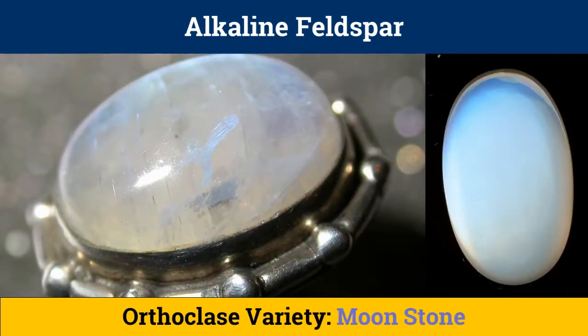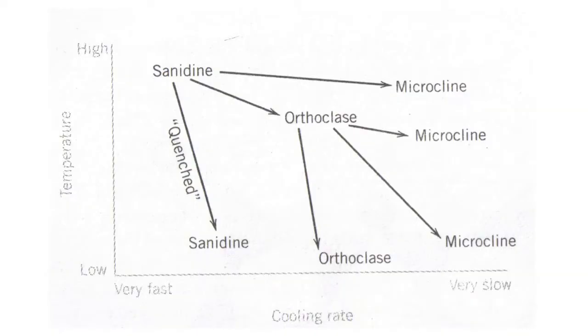Orthoclase shows variable ordering as it is formed at intermediate temperatures in intrusive rocks. Moonstone, a gem variety of orthoclase, is shown here. Thus, whether a specific Feldspar will retain its high-temperature disordered structure or transform upon cooling into a more ordered structural state is influenced by the cooling rate of the process.